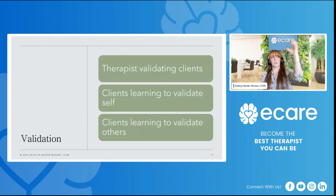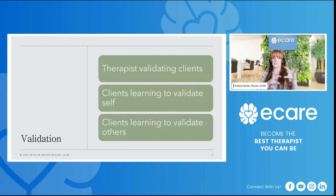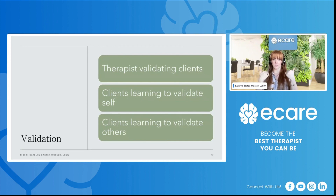Within DBT, there are levels of validation, and the key things we're really doing are: validating clients, helping clients learn to validate themselves, and helping clients learn how to validate others. Validation is really pervasive throughout the whole model of DBT. For clients who struggle with self-validation, us showing them what validation looks like — and genuinely validating our clients — can be so helpful in them learning how they can then take that and start to self-validate.